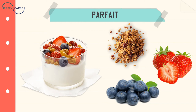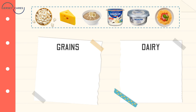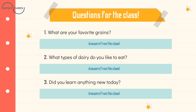Time for some review games! You're going to take the top examples and put them in each one of the groups — which ones are grains and which ones are dairy? In our grains group we have popcorn, oatmeal, and pasta. In the dairy group we have cheese, cream cheese, and yogurt.